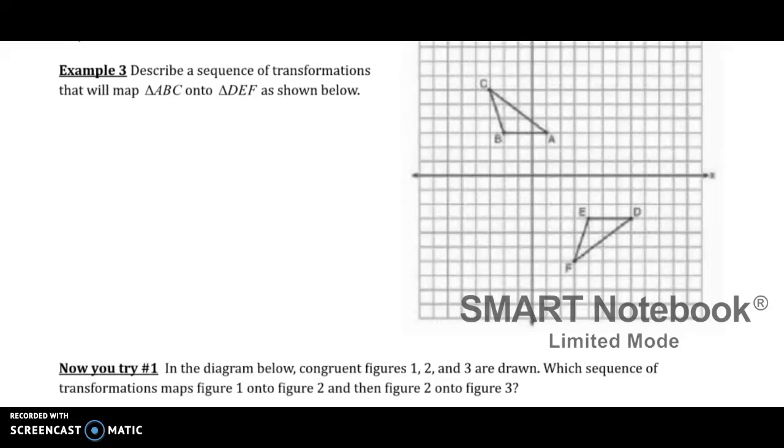This is Unit 3, Lesson 7, Example number 3. So describe a sequence—that means there's going to be more than one. A sequence means more than one thing has happened.